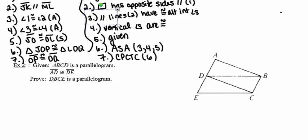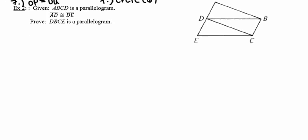Moving on to example two — I'm again given that one of the figures in my diagram is a parallelogram, so I'll highlight figure ABCD as a reminder that it carries all the parallelogram properties. The other given piece of information is that segment AD is congruent to segment DE. We're asked to prove that the other quadrilateral, DBCE, is also a parallelogram. There are multiple ways to prove a quadrilateral is a parallelogram; I only need to satisfy one of those requirements.